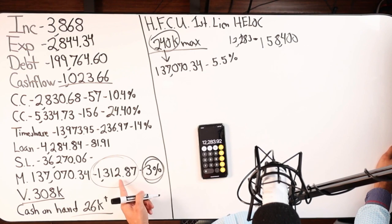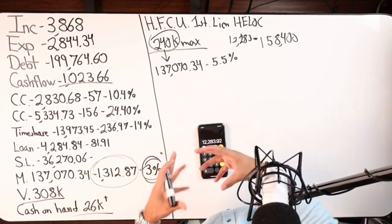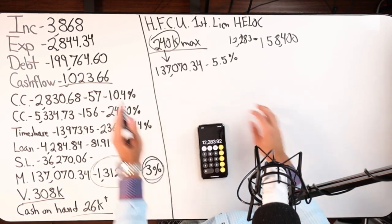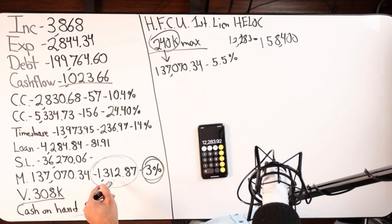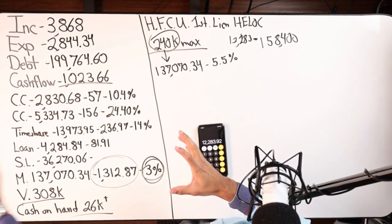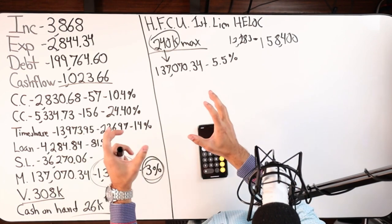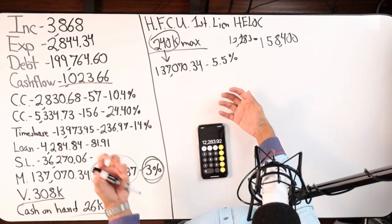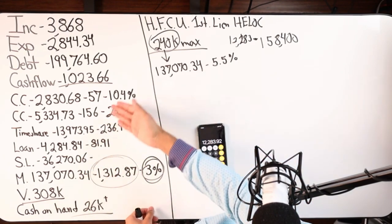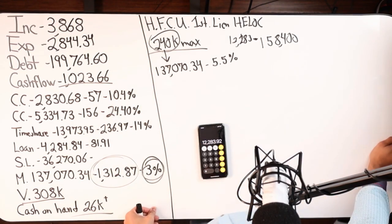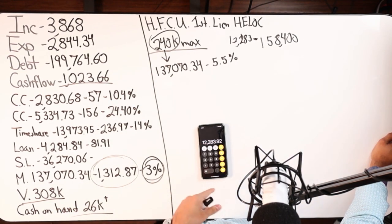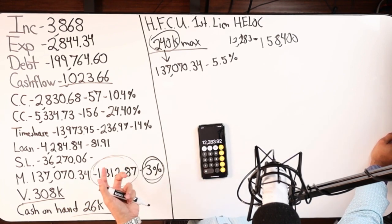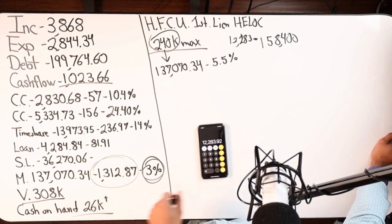That $1,312.87 mortgage payment, once refinanced, becomes cash flow, an amount that stays in the line. The $2,844.34 that was coming out, with a first lien HELOC $1,312 no longer comes out, it just stays. Every time the paycheck lands it stays low as a rate. What's coming out is the person's expenses, other debt payments, and living expenses.